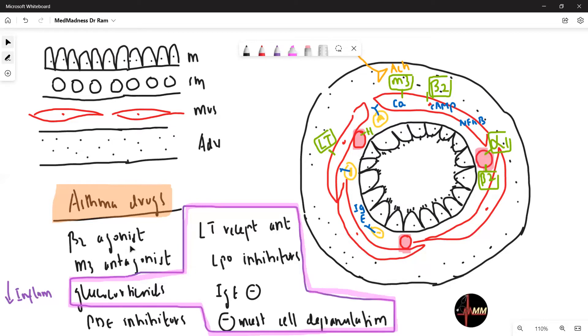Beta-2 agonist. You give a drug that is going to act on the beta-2 receptor. This is going to bronchodilate.